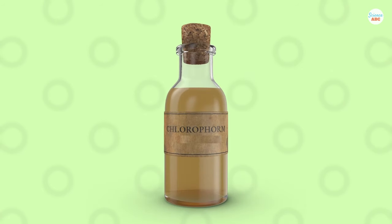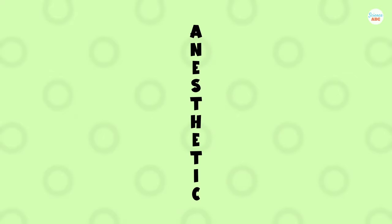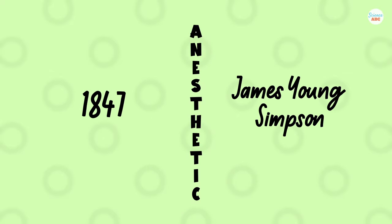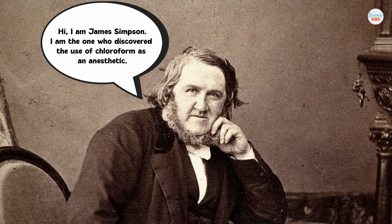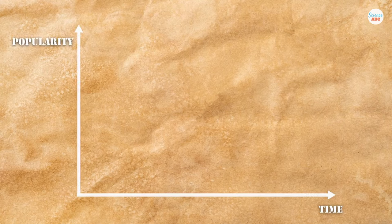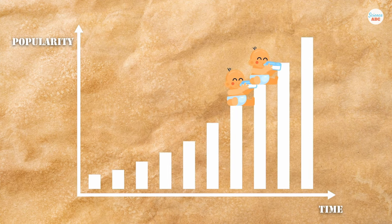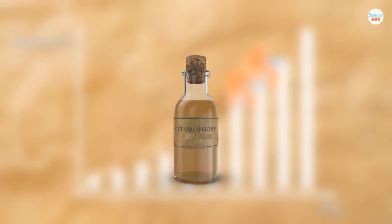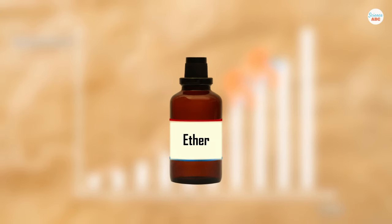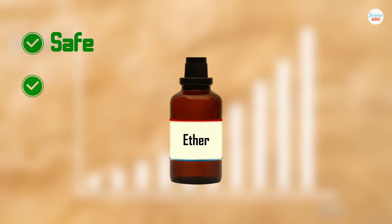Chloroform is most famously used as an anesthetic, a practice that began in 1847 by an obstetrician named James Young Simpson. Initially, he used it as an anesthetic on two people. A few days later, it was successfully used in a dental procedure in Edinburgh with no discernible adverse effects. Soon, its popularity as an anesthetic soared, and it was even used during the birth of Queen Victoria's last two children in the 1850s. Its golden age, however, was short-lived, as it was soon replaced by ether, which was much safer and had virtually no side effects.